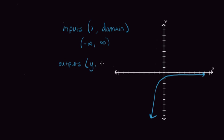Now looking at outputs — y or the range — we take a vertical scan to see where we have values. I have values down in the negative range, but as I get closer to zero I'm never reaching it, and there's nothing above zero. So we have everything from negative infinity up to zero, but not including zero since we're only ever getting closer and closer. To summarize: take a horizontal scan for inputs and a vertical scan for outputs, and see where you have values.